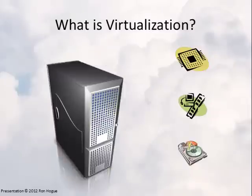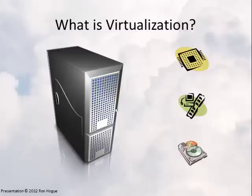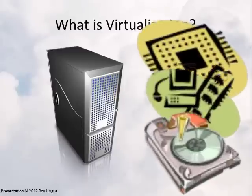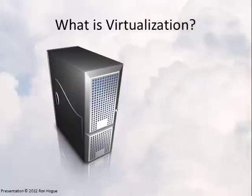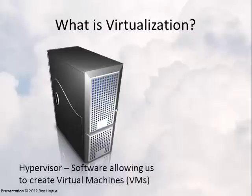Let's introduce a server. This server has a lot more resources than your computer — a lot more CPU, RAM, and hard disk space. We can take software and put it on this server in order to get multiple machines on it. This software that we install is called a hypervisor, and a hypervisor is just software that allows us to create virtual machines on this physical machine.